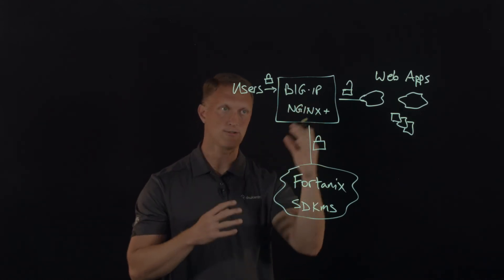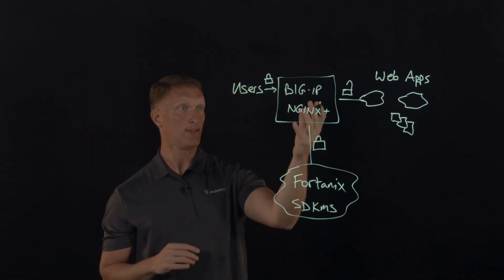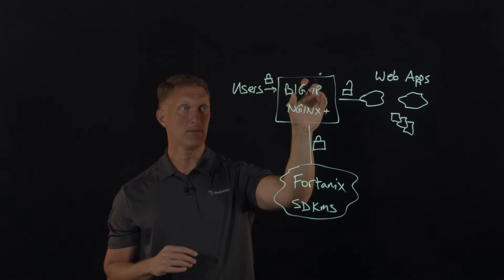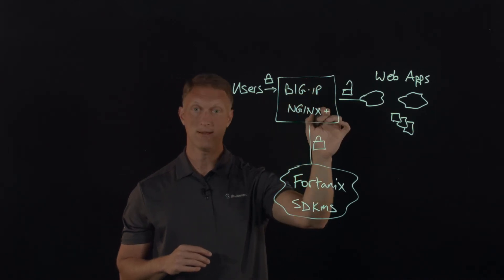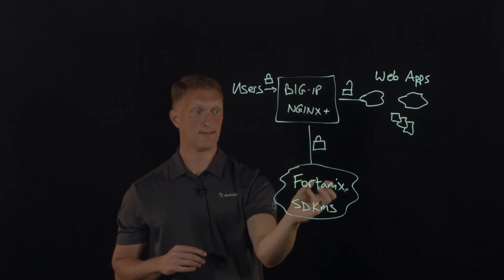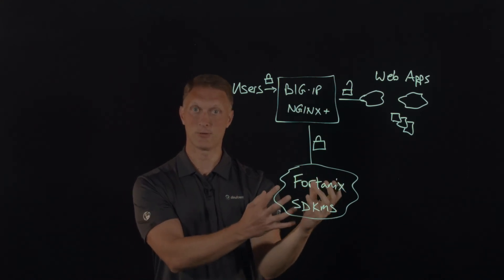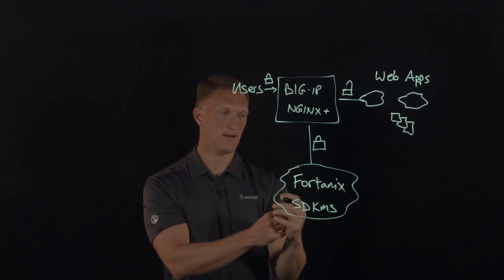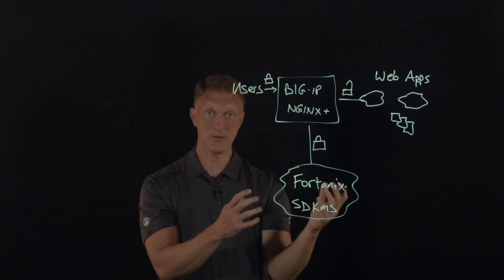We've got the detailed instructions on how to do all this stuff, but effectively that's what happens. So you've got the plugin that you would install either on Big IP or NGINX plus. And then that connects you down here to Fortanix, on either their cloud or on-prem deployment.